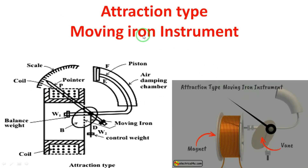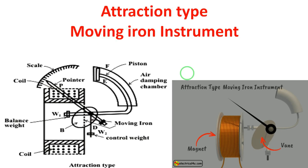Attraction type moving iron instrument — we will look at its construction using 2D and 3D diagrams. The attraction type is very clear. Repulsion type is also easy. Let us go through the construction of the attraction type moving iron instrument.